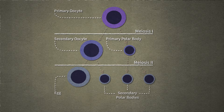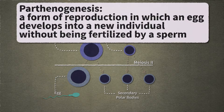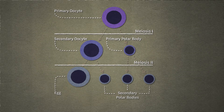The egg may then be fertilized by a sperm to produce an offspring. This is how offspring are usually produced. Parthenogenesis is a form of reproduction in which an egg develops into a new individual without being fertilized by a sperm. Let's examine normal oogenesis more closely before considering reproduction through parthenogenesis.